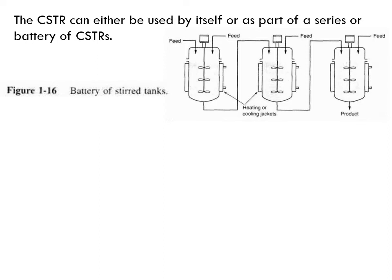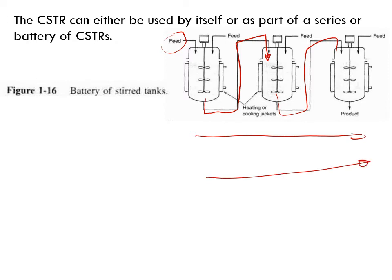The CSTR can either be used standalone or as part of a series — a battery of CSTRs. In a series configuration, the feed is introduced to the first CSTR and the outlet becomes the feed to the second CSTR, and so on. You can have, for example, three CSTRs in series forming one line, with multiple lines making an array or battery of CSTRs.